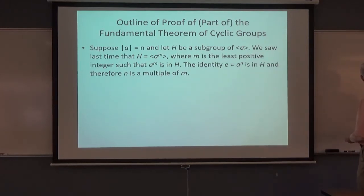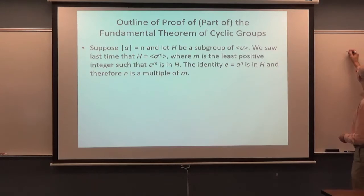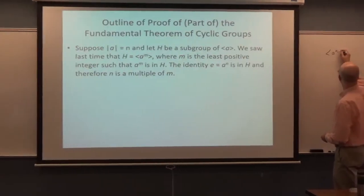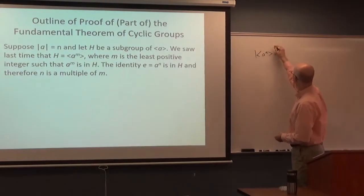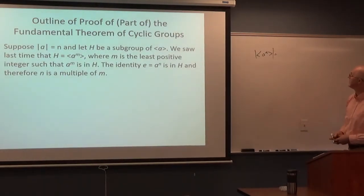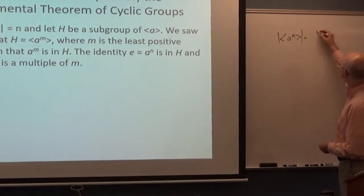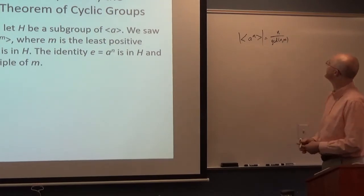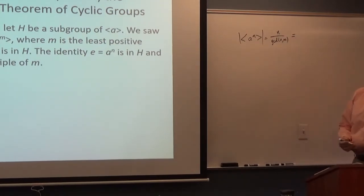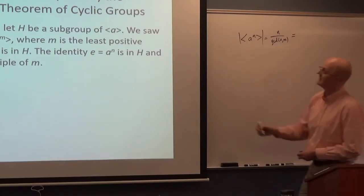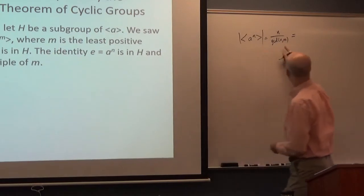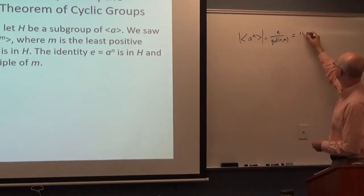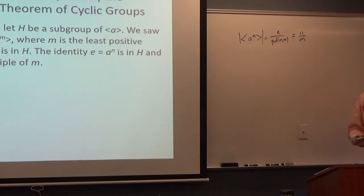You can also note that if m is the least positive integer so that this is true, the order of the cyclic subgroup generated by a^m equals n divided by GCD(n, m) from the previous theorem. Since m divides n, the GCD of n and m is m, so the order of a^m is n over m, which is an integer because n is a multiple of m.